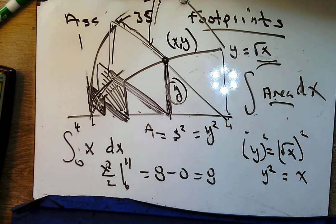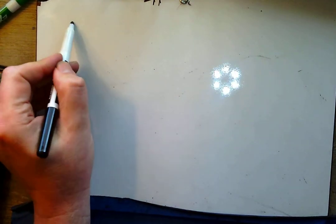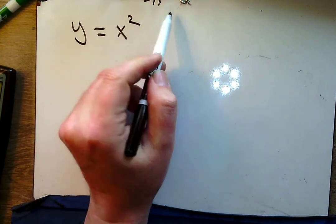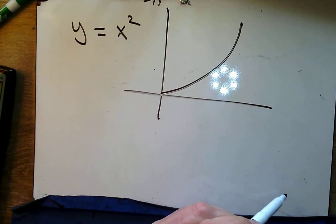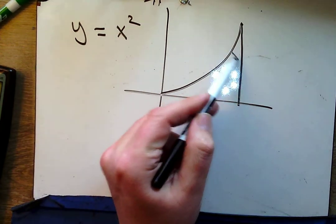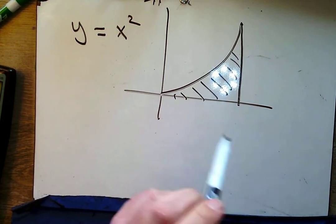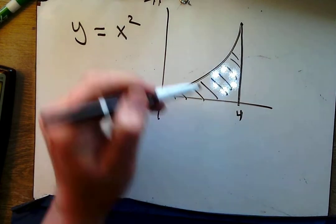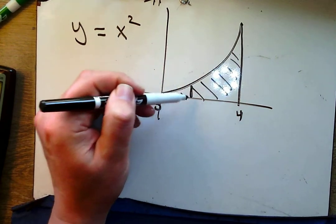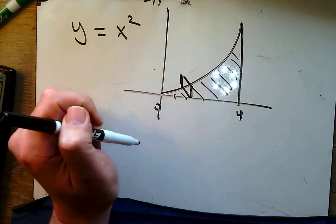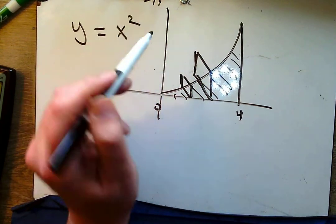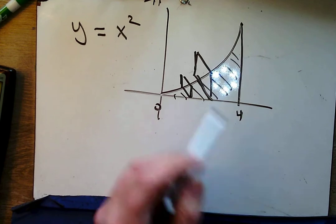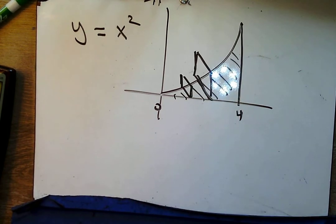What if instead of y equals square root of x, we had y equals x squared, and we were looking on 0 to 4? This is the area I'm talking about — this is my footprint from 0 to 4. On this footprint I want to build squares. Find the volume of the shape where you're putting an infinite number of squares, and tell me what the volume of that solid would be. Take your time.